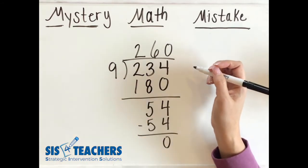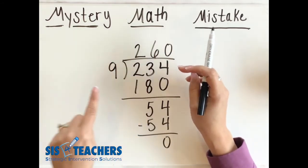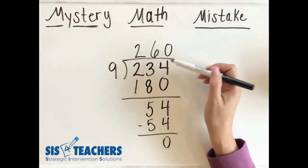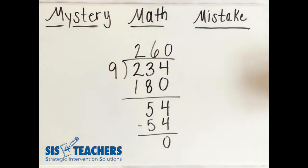And so I ended up with the leftover of 54 and then I went ahead and did my 6 times 9 is 54. So my answer is 260. I think that 9 goes into 234 260 times.